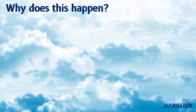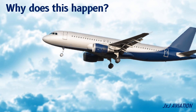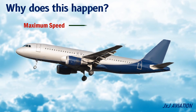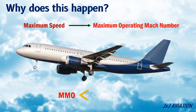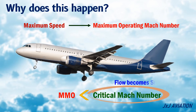The maximum speed at which an aircraft can fly is called the maximum operating Mach number, or MMO. On a subsonic aircraft, MMO should always be less than the critical Mach number. The critical Mach number is defined as the speed at which the flow accelerates to supersonic speeds over the top surface of the wing.